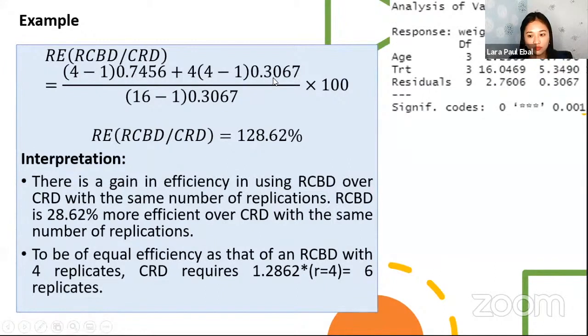And then another value, 0.3067 is the mean square for the error, for the MSE. So we plug in the values and then we get 128.62%. So lampa siya ng 100%. Therefore, there is this gain in efficiency in using the RCBD over the CRD with the same number of replications. So RCBD is 28.62% more efficient over the CRD with the same number of replications.